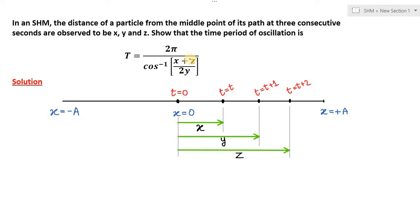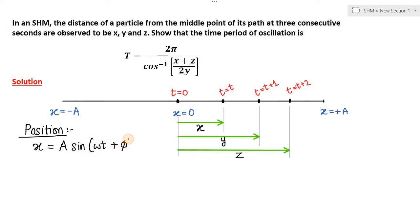Let's start. The position of the particle in an SHM is usually given by a sine function: x is equal to a sine (ωt plus φ). But in some books they may start with cosine function also — there is nothing wrong in that. However, we have to convert this into cosine function because the question demands cos inverse, so this sine form will not work here.